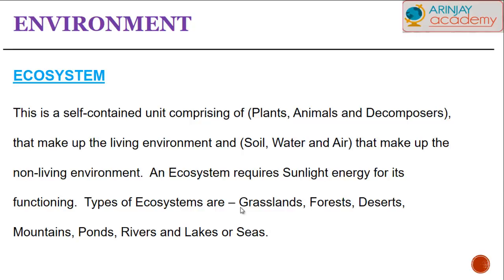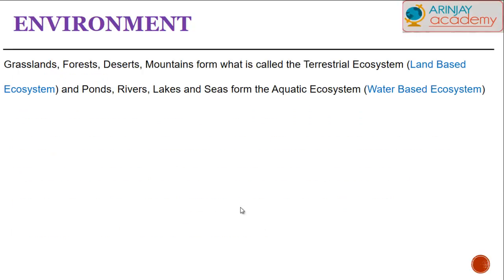There are two types of ecosystems in general. Grasslands, forests, deserts, and mountains form what are called the terrestrial ecosystem, or the land-based ecosystem.